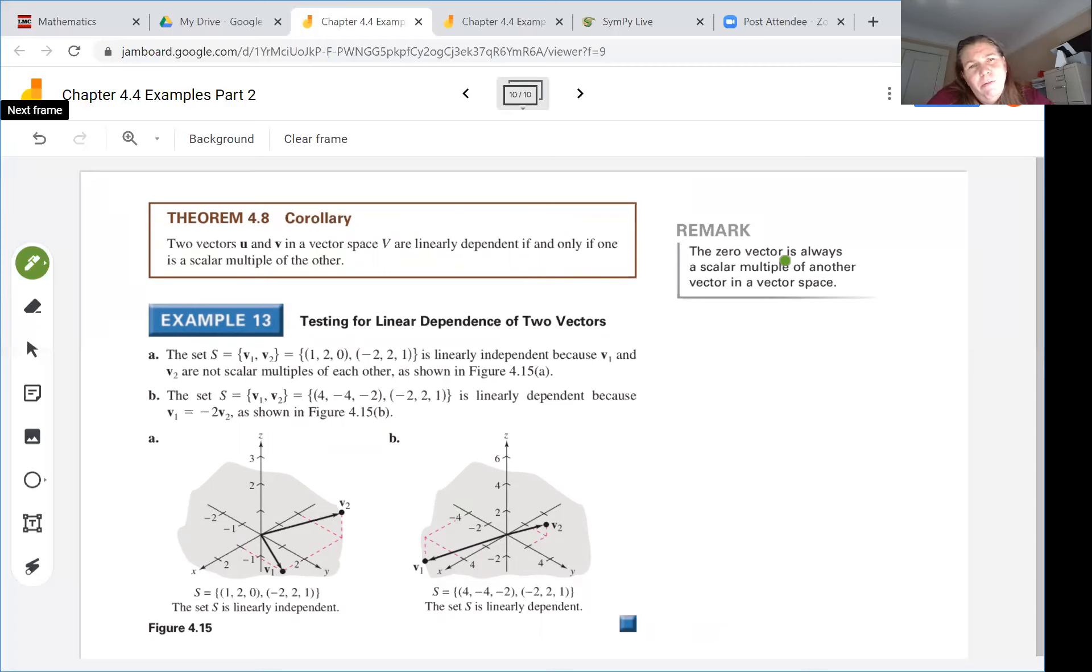So here's an example where we're testing for linear dependence of two vectors. So if you've got the set V1, V2 where V1 is one, two, zero, you can see that down here in this diagram. This set is linearly independent because we can see that V1 and V2 are not scalar multiples of each other. We can see that here. We can see they're in different planes and not multiples.